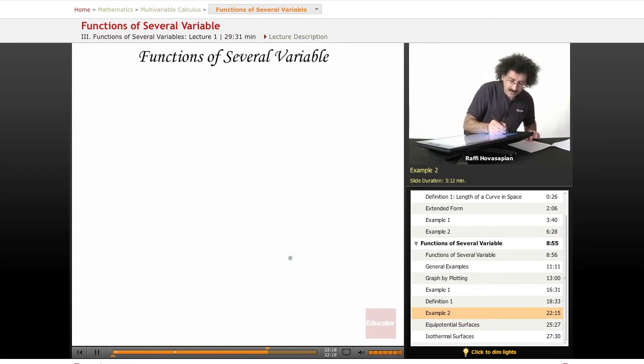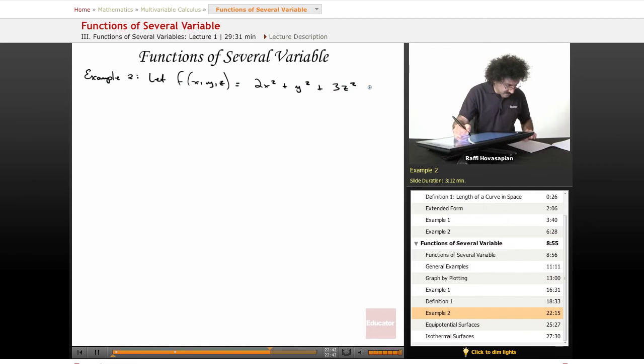Now let's do another example here, example two. We'll let f(x,y,z), so this time this is a function of three variables, equal 2x² + y² + 3z².